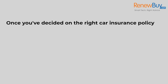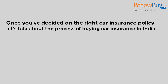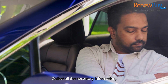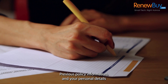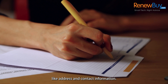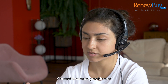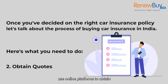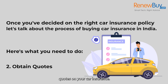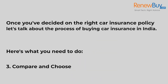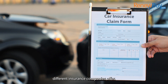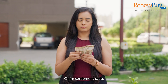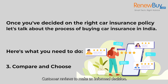Once you have decided on the right car insurance policy, let's talk about the process of buying car insurance in India. First, gather information — collect all the necessary information including your vehicle details, previous policy information, and your personal details like address and contact information. Next, obtain quotes by contacting insurance providers or using online platforms. Then compare the quotes, coverage, and benefits different insurance companies offer, considering their reputation, claim settlement ratio, and customer reviews to make an informed decision.